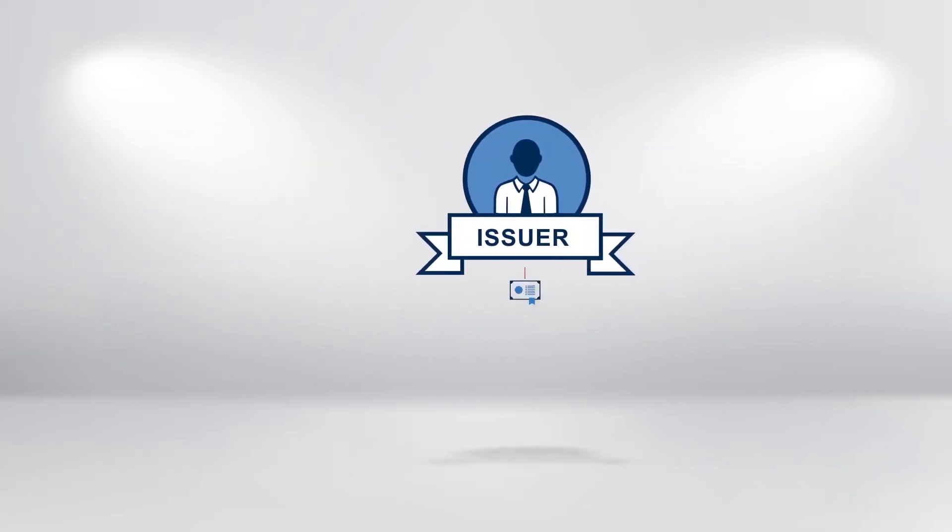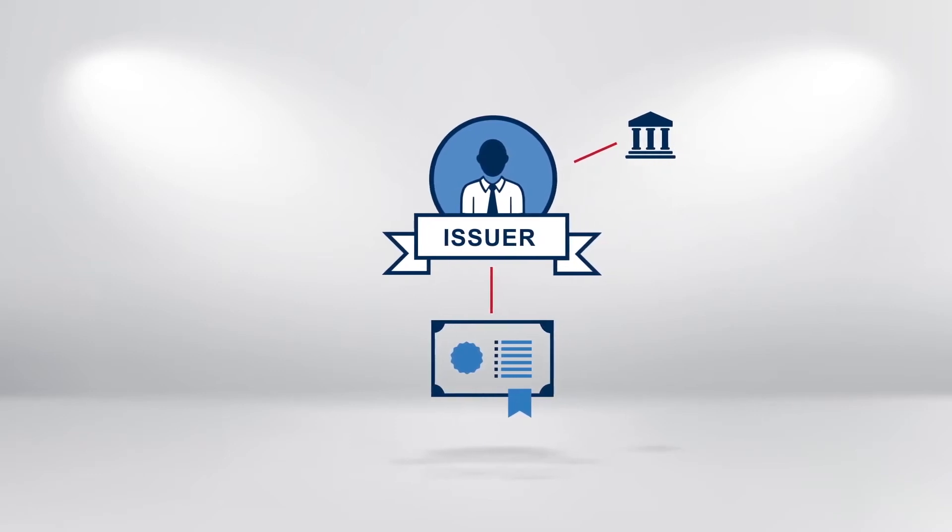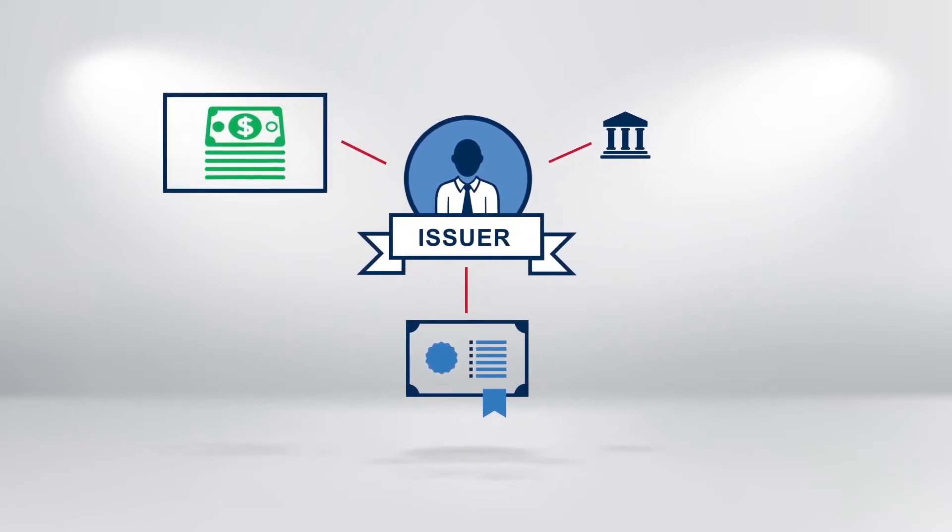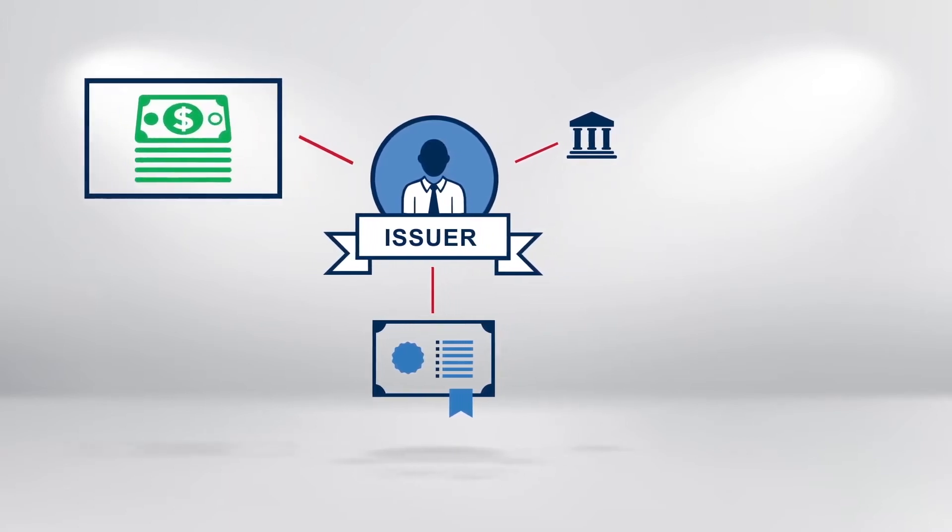The main reason why an issuer will choose to issue a bond, rather than borrow the money directly from a bank, is that the amount the issuer needs to borrow is larger than the amount they could borrow from a single bank.